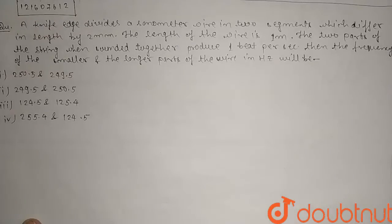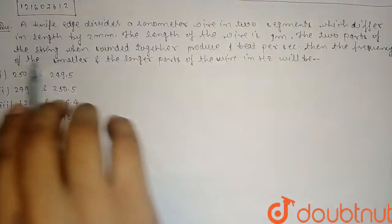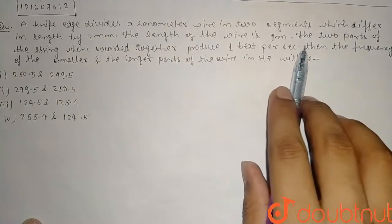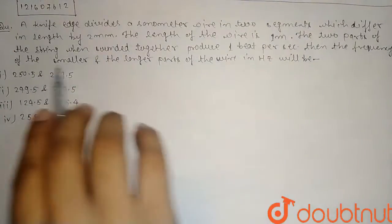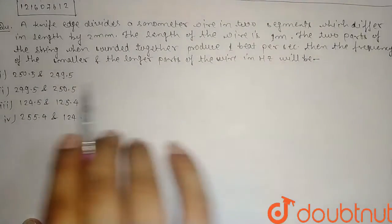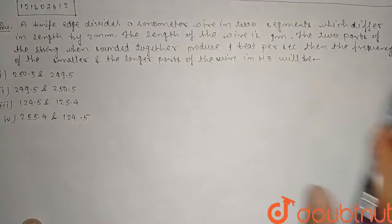Hello friends, this question is asking me: A knife edge divides a sonometer wire in two segments which differ in length by 2 mm. The length of the wire is 1 meter. The two parts of the string when sounded together produce 1 beat per second. Then the frequency of the smaller and larger longer parts wire in Hertz will be.